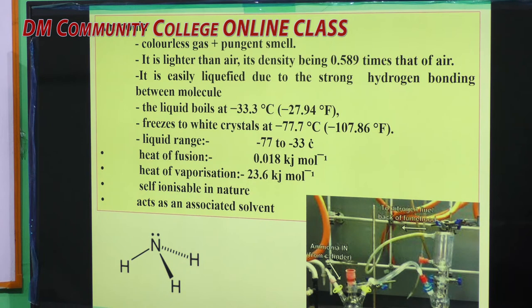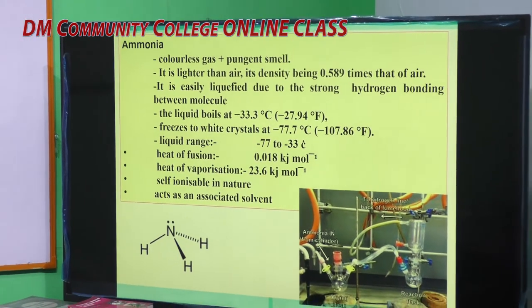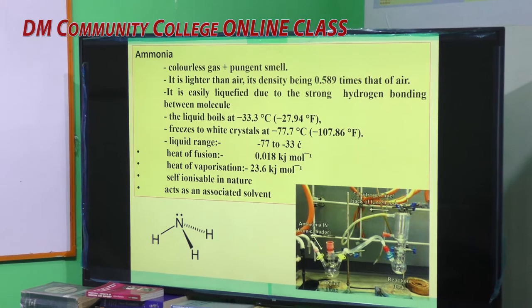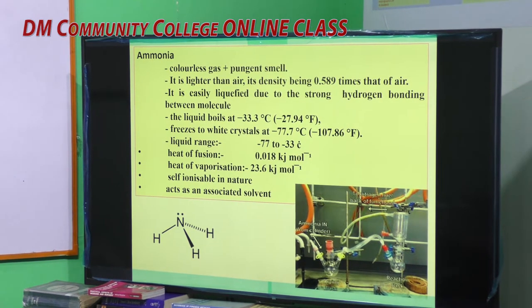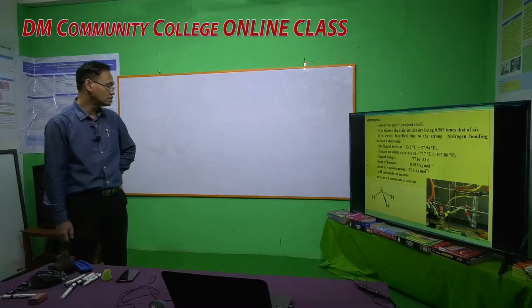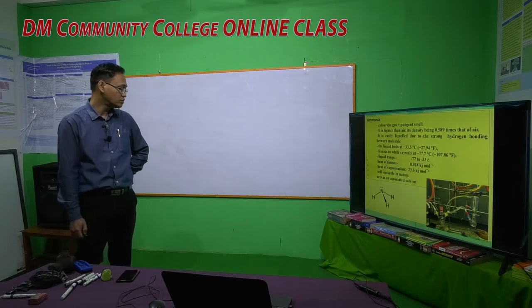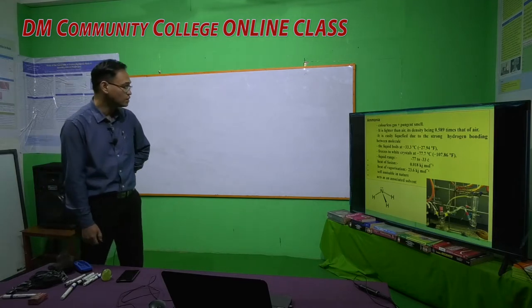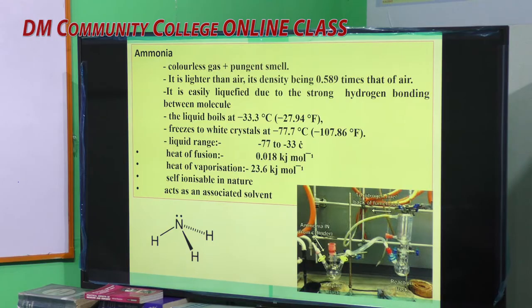Ammonia is a colorless gas with a pungent smell. It is lighter than air — its density is 0.589 times that of air. It is easily liquefied due to strong hydrogen bonding between molecules, since the electronegativity of nitrogen and hydrogen varies greatly, allowing them to form good hydrogen bonds. Ammonia boils at minus 33.3 and freezes to white crystalline solid at minus 77.7 degrees centigrade.